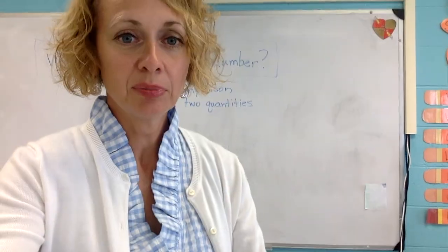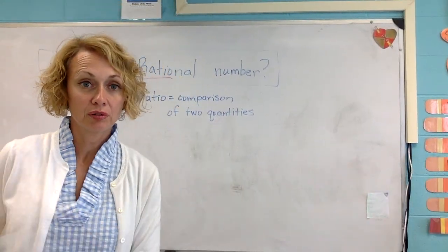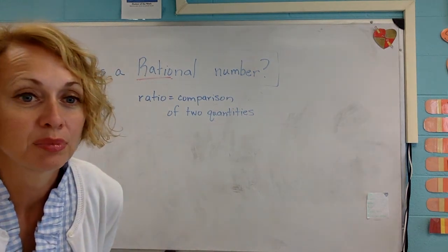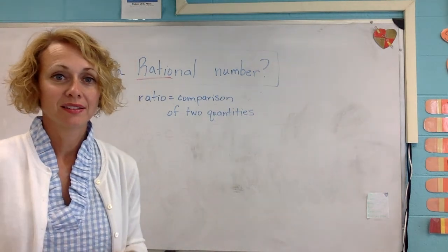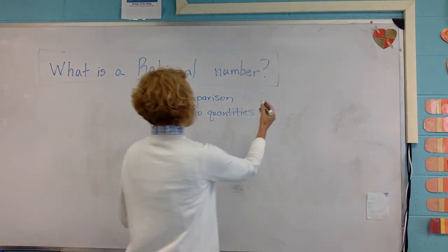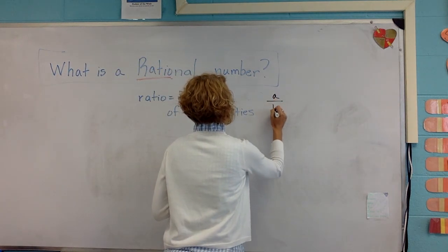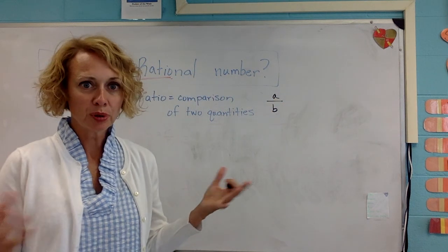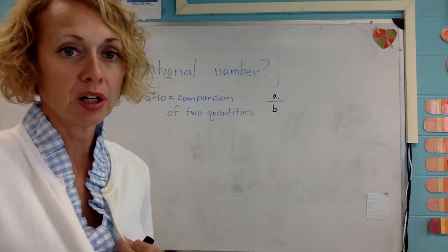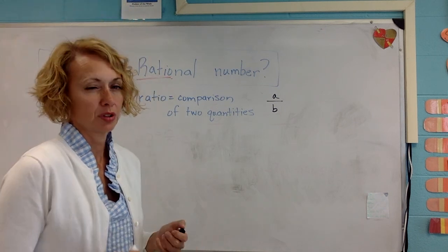So really what that means for us is we can simply understand that the definition of a rational number is a number that can be written as A over B, a fraction. So let's just practice identifying whether or not a number is rational.